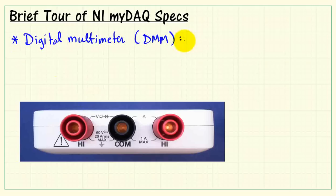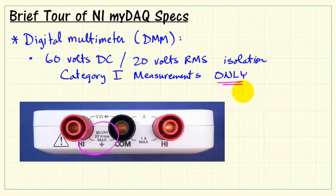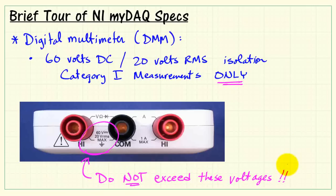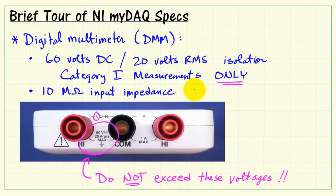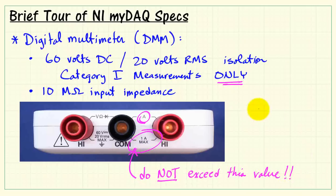Let's wrap things up by looking at the digital multimeter connections — DMM for short. Pay attention to the printed indicators that tell you the limits of operation: 60 volts DC and 20 millivolts RMS. These are the maximum values you should ever apply to MI-DAC. It is a Category 1 measurement device, so you must not exceed these voltages. When using the voltmeter side of the DMM, we have 10 megaohms for the input impedance. When using the current meter, do not exceed 1 amp. Internally, MI-DAC is protected by a 1.25 amp fuse.